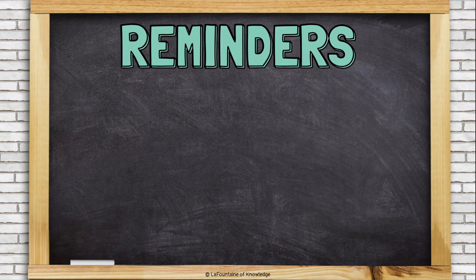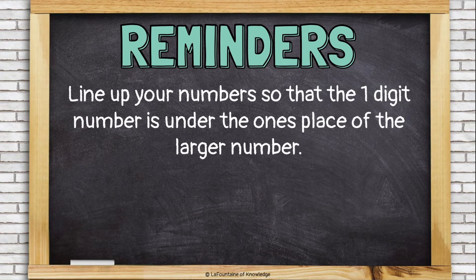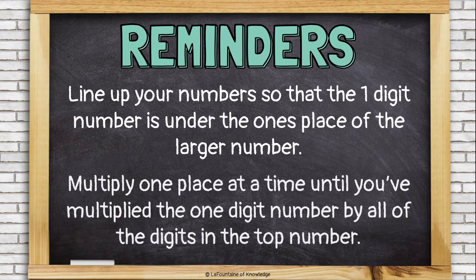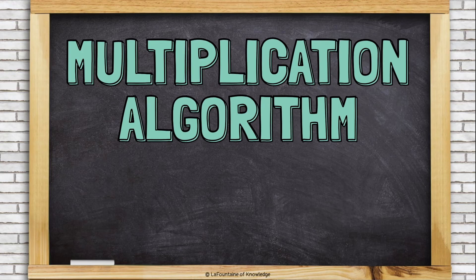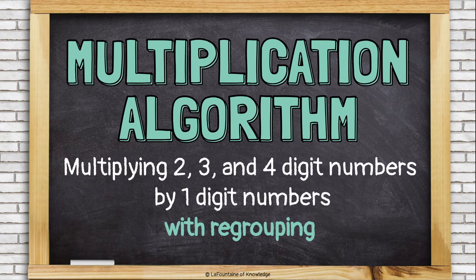Let's review. Line up your numbers so that the one-digit number is under the ones place of the larger number. Then, multiply one place at a time until you've multiplied the one-digit number by all of the digits in the top number. Now, let's look at the multiplication algorithm still with 2, 3, and 4-digit numbers times 1-digit numbers, but this time let's look at how to do it with regrouping.